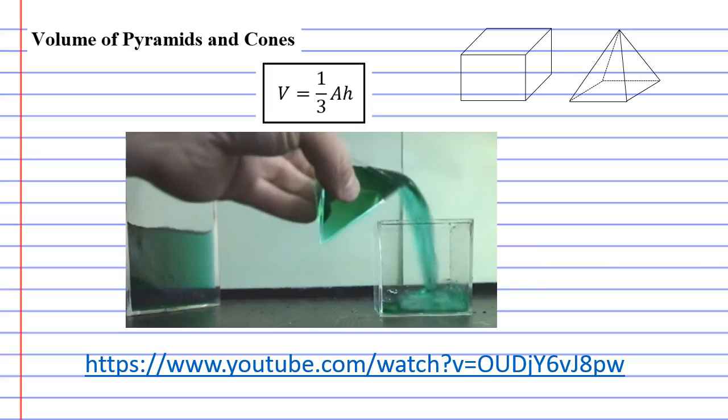Volume of pyramids and cones. Now you'll notice that this formula here says volume is one-third times area times height.